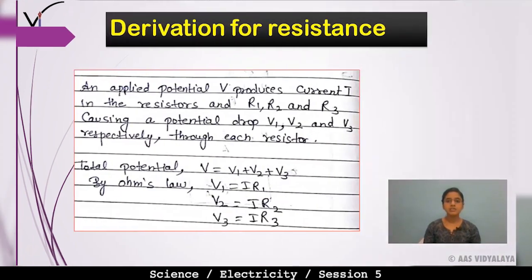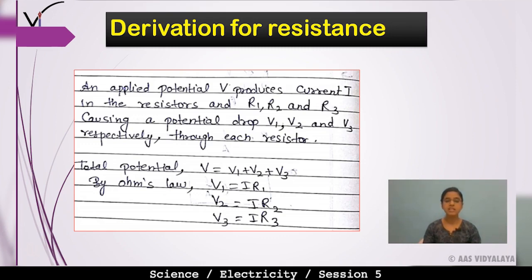Now, how can we find the equivalent resistance? Here is the derivation for equivalent resistance in series combination. An applied potential V produces current I through the resistors. Current I flows through R1, R2, R3, causing potential drops V1, V2, and V3 respectively across each resistor.